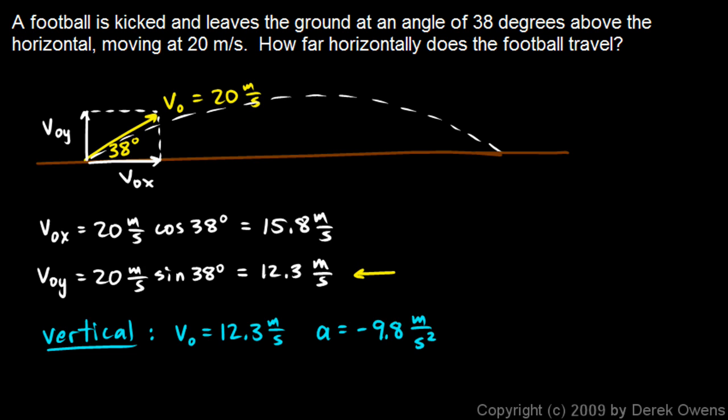And again, when I decided that this number was a positive 12.3, the vector going up, then that is equivalent to saying that up, or that is implying that up is my positive direction. So the acceleration here has to be negative. And then I know my initial height is 0, and I know my final height is 0. It starts off over here, and ends up over here, a height of 0 in both cases.